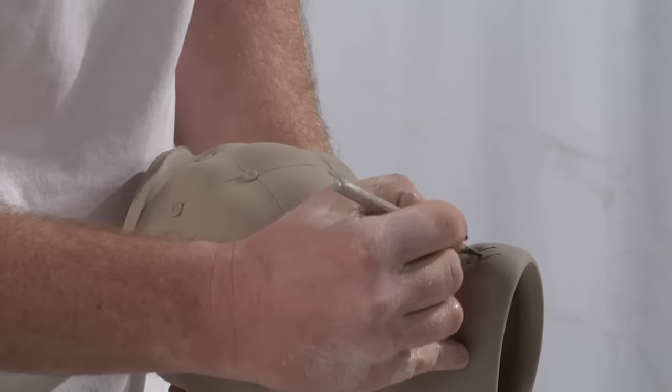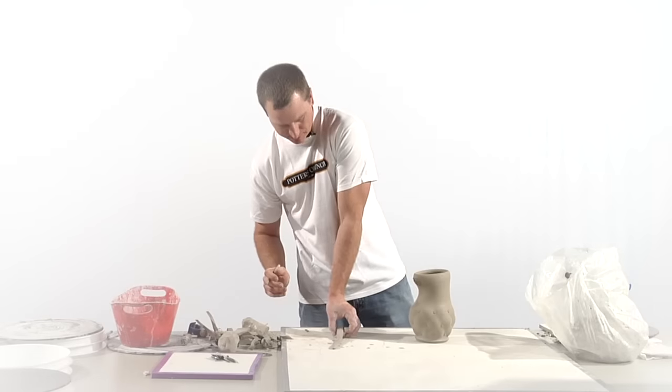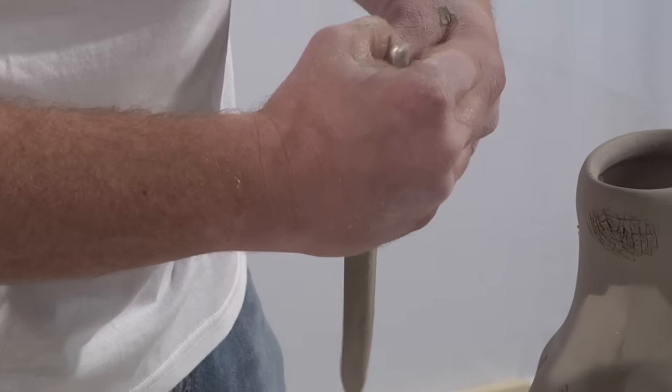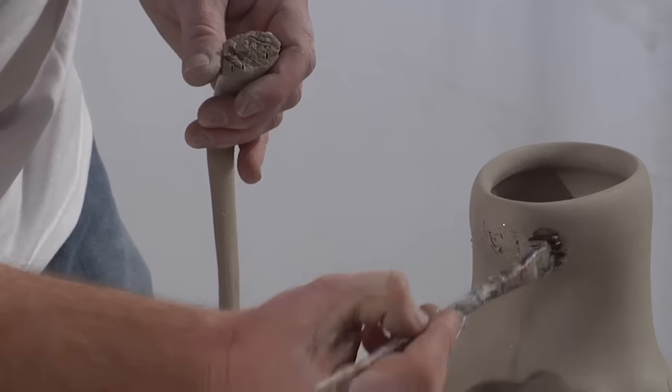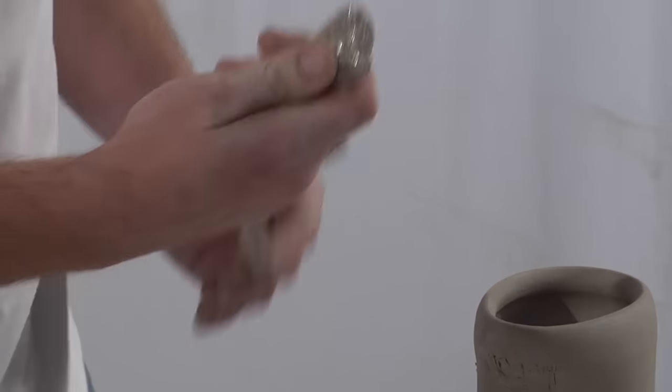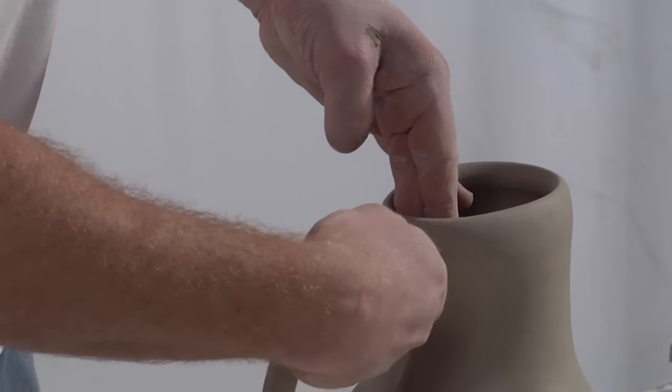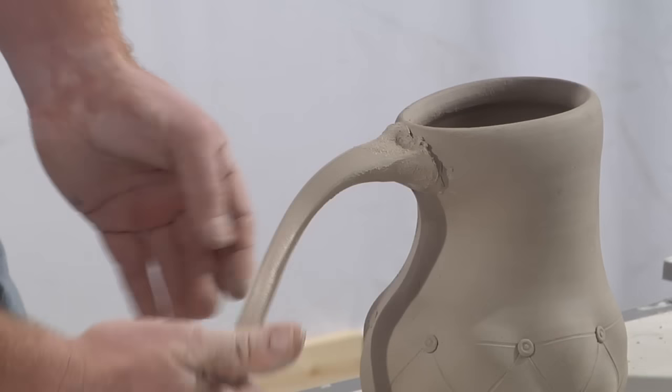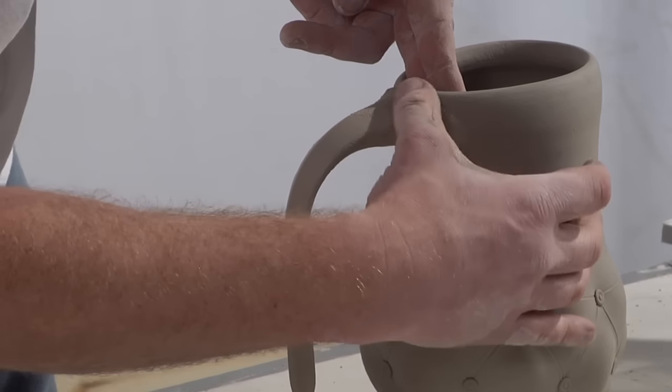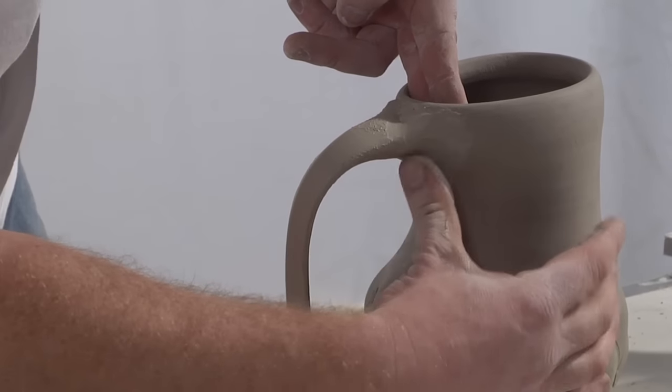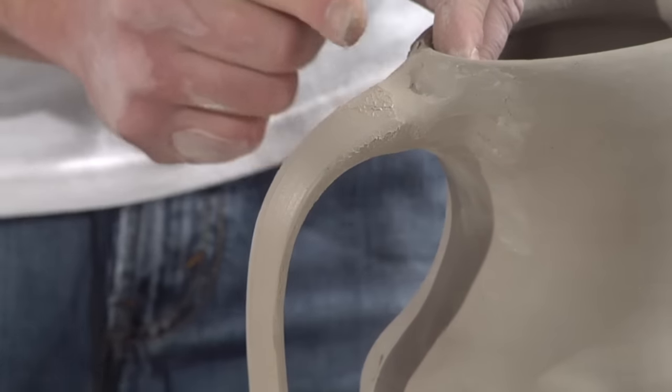So I'm now going to score the surface where the handle will connect to, and I will score the surface of the handle where it's going to connect to the piece. A little bit of slip. I'm then going to take that thick part of that handle and push it into place and wiggle it around.